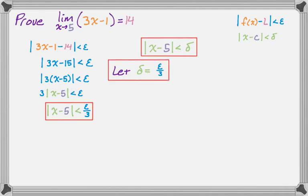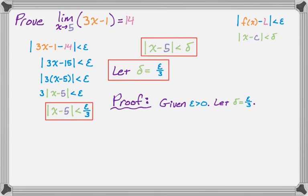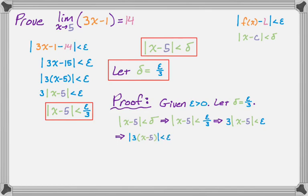Starting the proof: given epsilon greater than 0, let delta equal epsilon over 3 as found by manipulation. If we're in that delta neighborhood — so the absolute value of x minus 5 is less than delta — that implies the absolute value of x minus 5 is less than epsilon over 3 by direct substitution. Multiplying both sides by 3 and bringing the 3 inside, we're just reversing the steps of the scratch work. It's important to keep that scratch work organized so you can refer back to it.